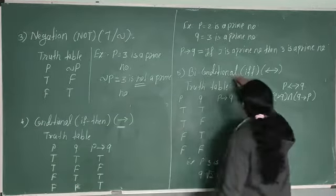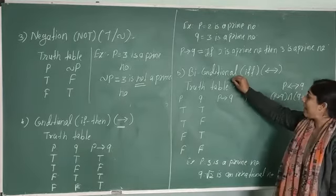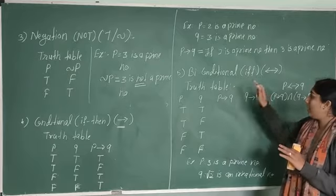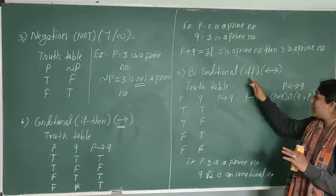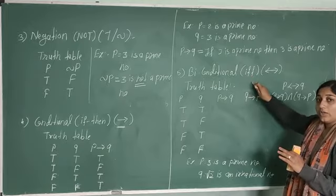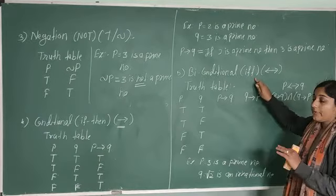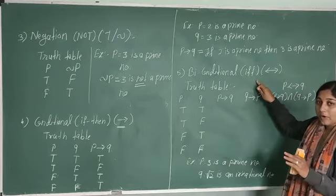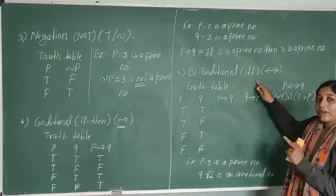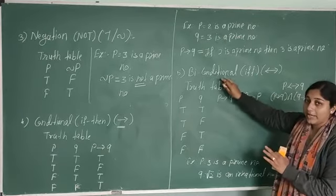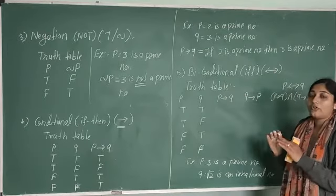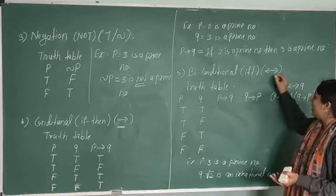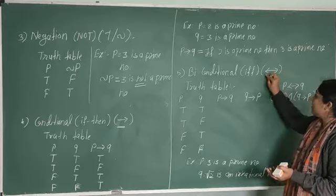Next is the bi-conditional statement. To form a compound statement, if you use the words 'if and only if' — written as 'iff' — then that statement is called a bi-conditional statement. When the word 'if and only if' appears in your compound statement, it means two statements are combined using this connective, and the notation for this is the double arrow.